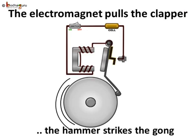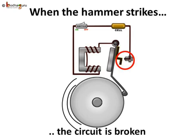The electromagnet then pulls the clapper towards itself. In this process, the hammer at the end of the clapper strikes the gong of the bell to produce a sound. Let us see what else happened when the electromagnet pulled the clapper and we heard the hammer striking the gong.